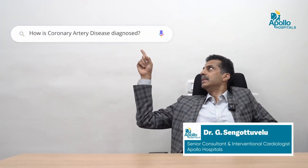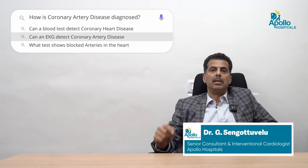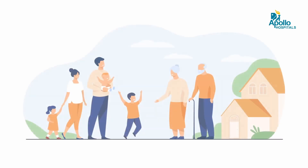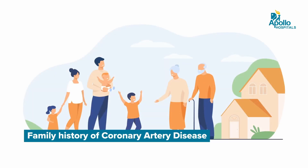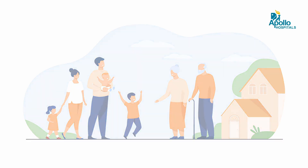How is coronary artery disease diagnosed? Usually, high-risk persons — for example, those with a strong family history of coronary artery disease, where a father, mother, grandfather, or cousin had a heart attack — are at higher risk. Even when asymptomatic, they should undergo tests so that coronary artery disease can be detected early and treatment started.